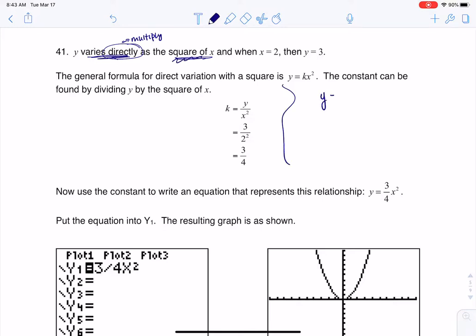So when I go to do that, I'm going to say y will be equal to k times, and I'm using multiplication because of the phrase directly. And then I need to do square of x, and that comes because it says literally square of x, so I'm going to put x squared.